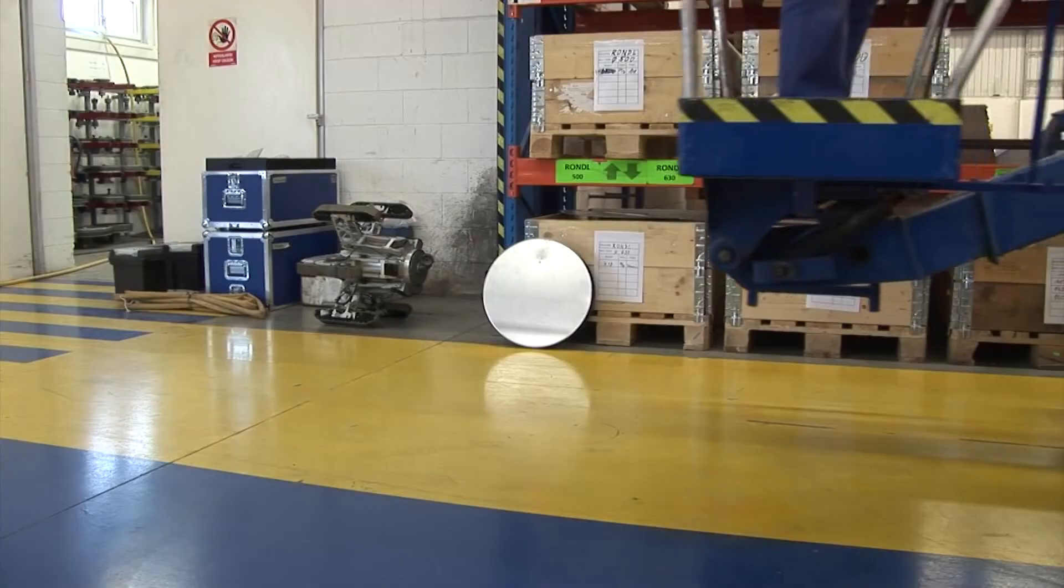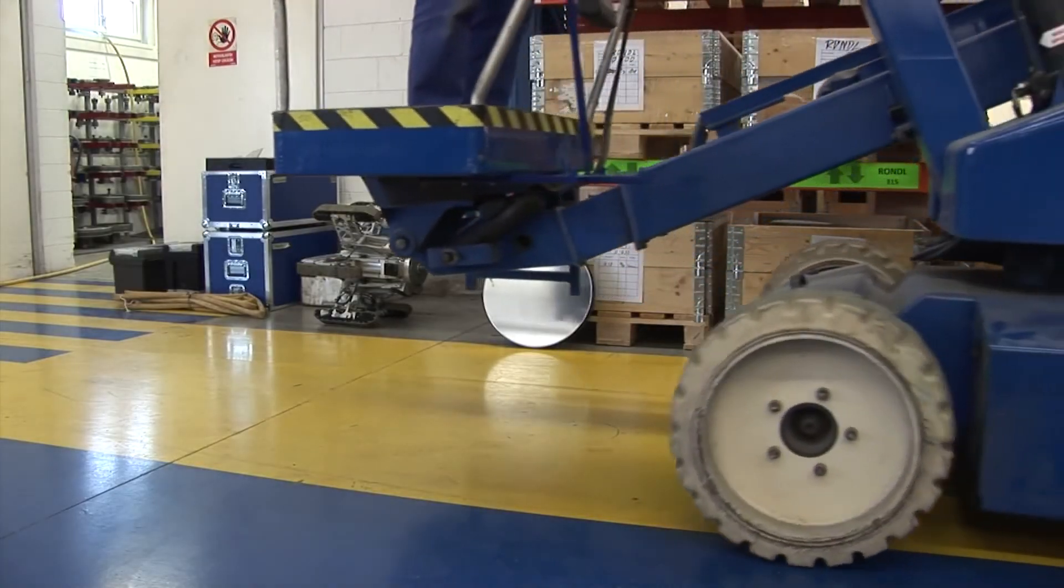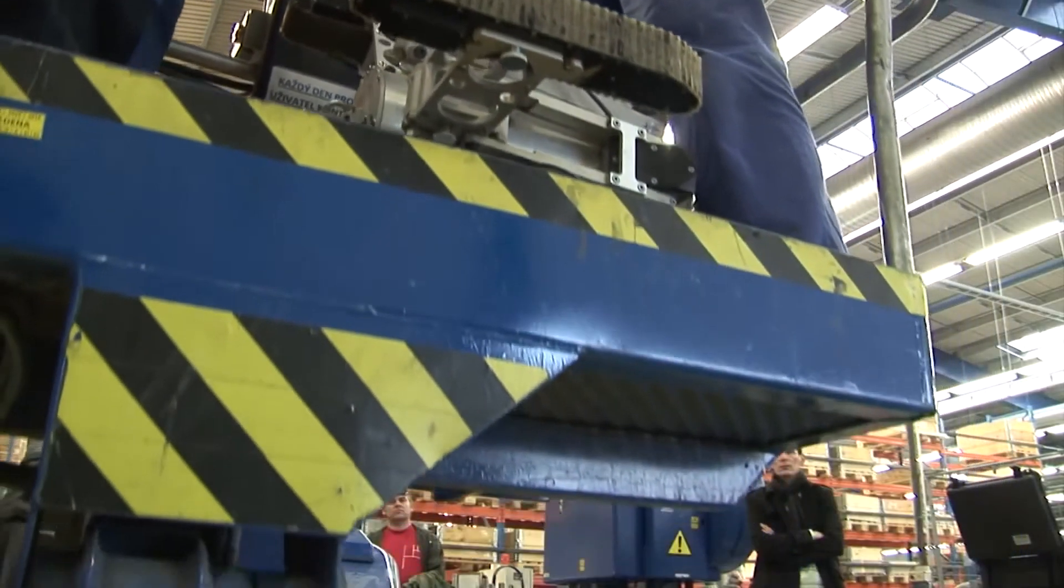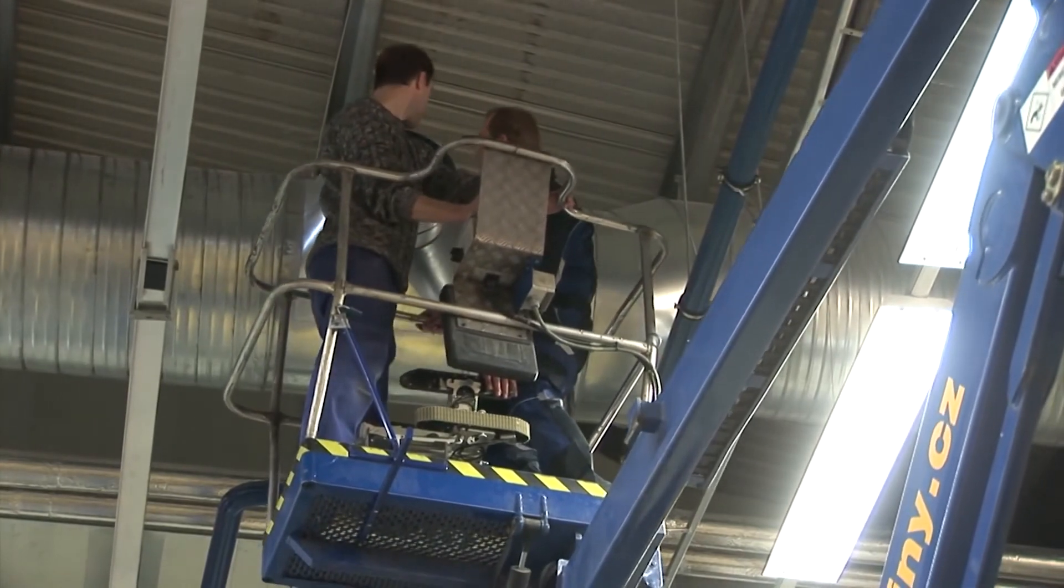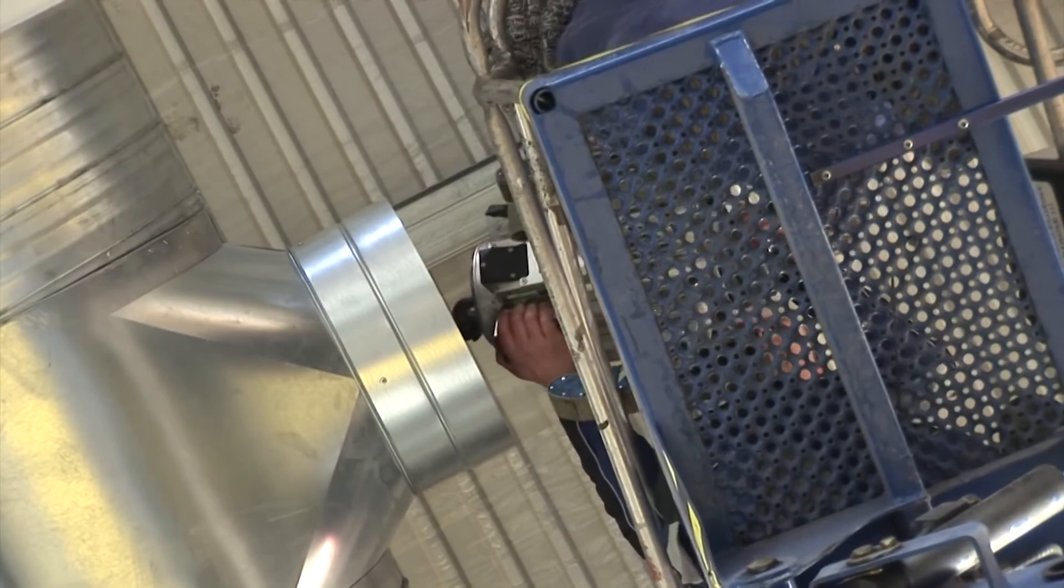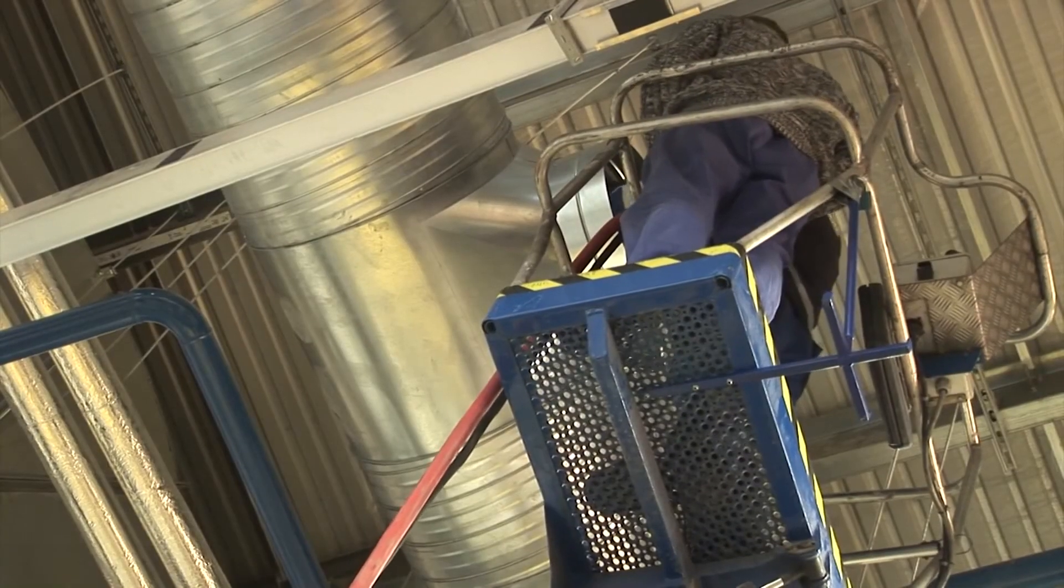The robot can be inserted into a duct system using a platform, scaffolding, or a footbridge. The robot can be inserted through an inspection window or a duct branch after removing the cap.